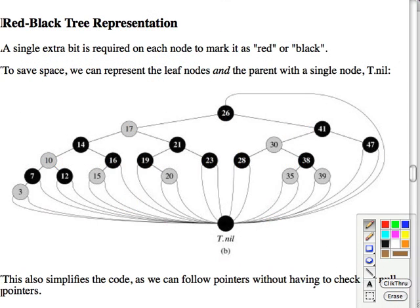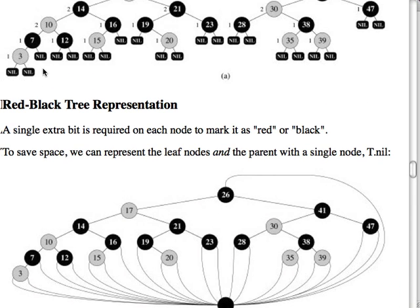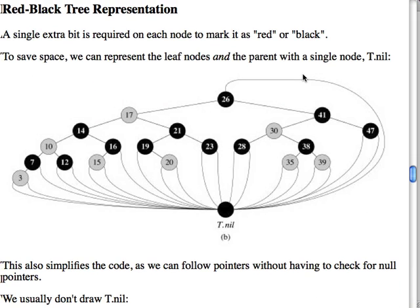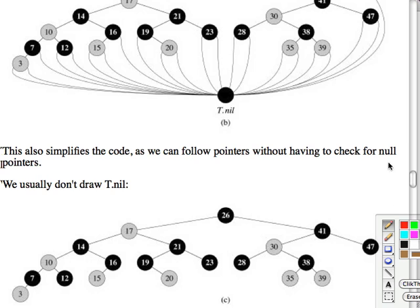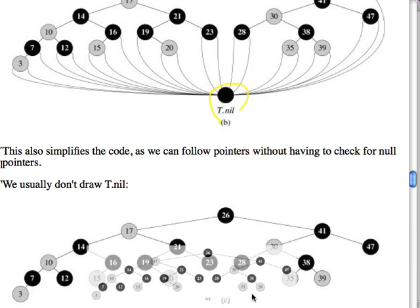A quick point about the visual representation used in the Corman text, which also corresponds to computer representations: rather than having all those nil leaf nodes proliferate, we represent all leaf nodes with a single nil node, T.nil — one object we can check for equality to tell that we've reached an empty leaf. We usually don't bother drawing this node since we know it's there.